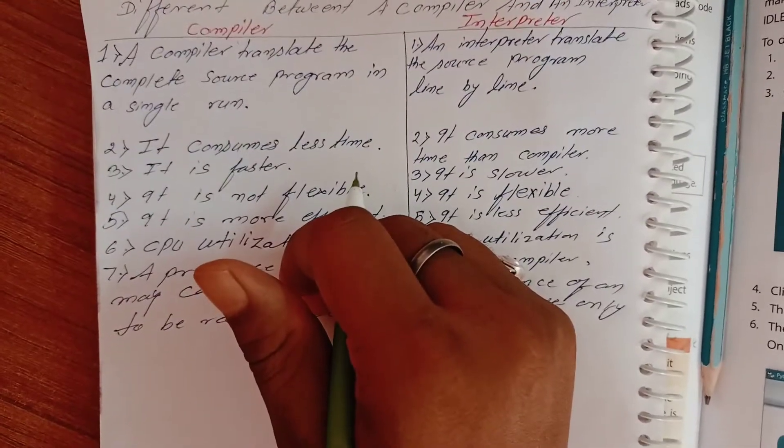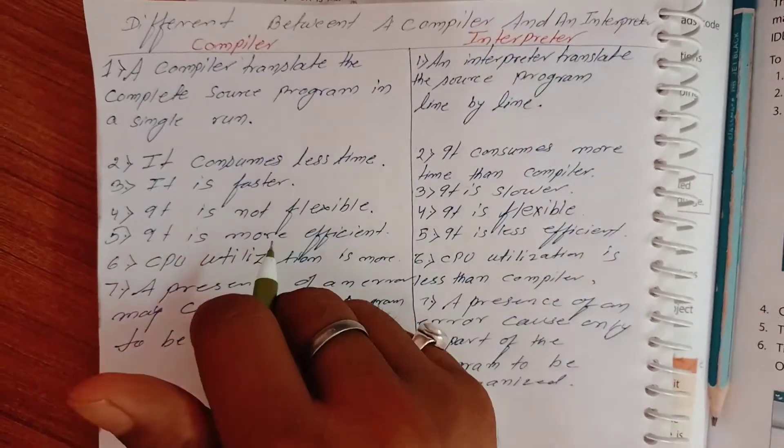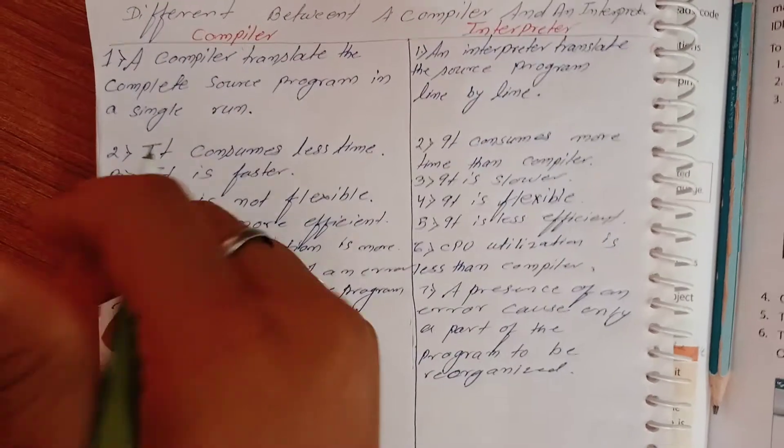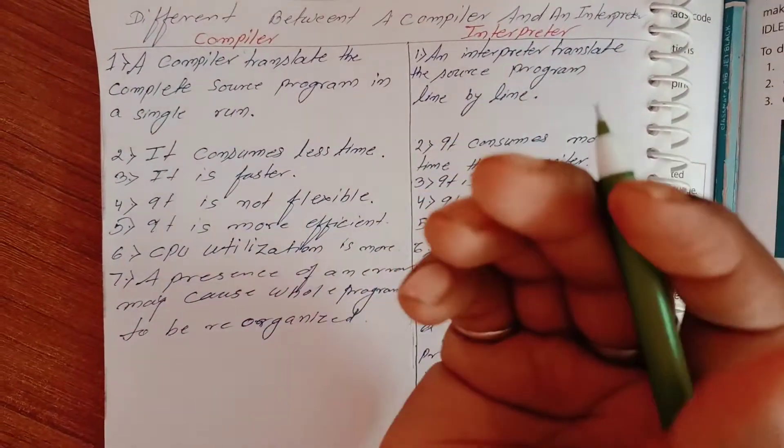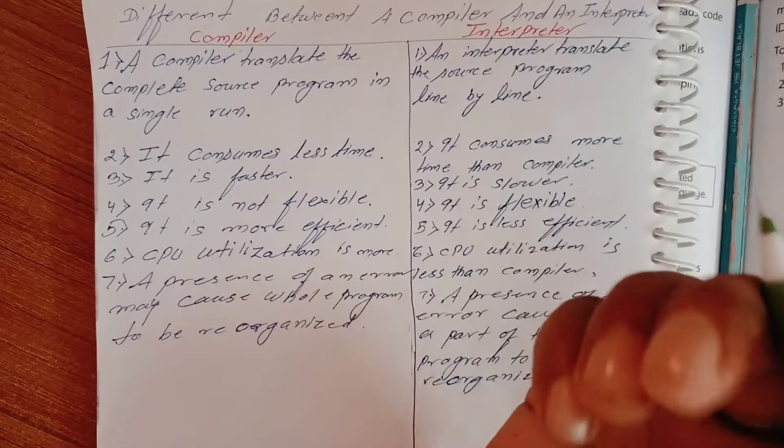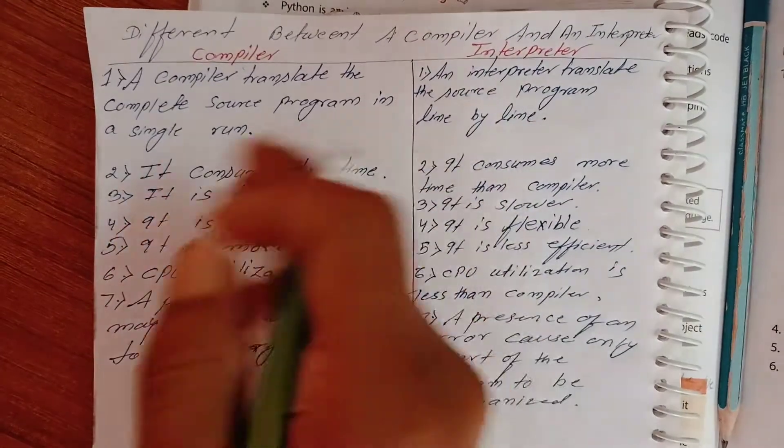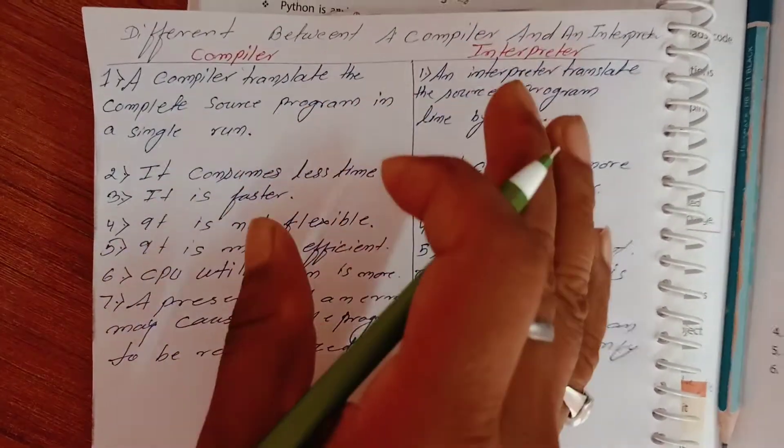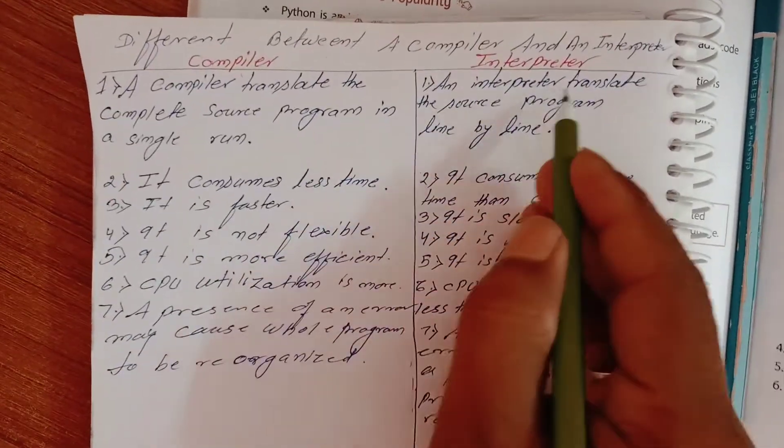First point: a compiler translates the complete source program in a single run, means at once it converts and translates. But in interpreter, it translates the source program line by line.